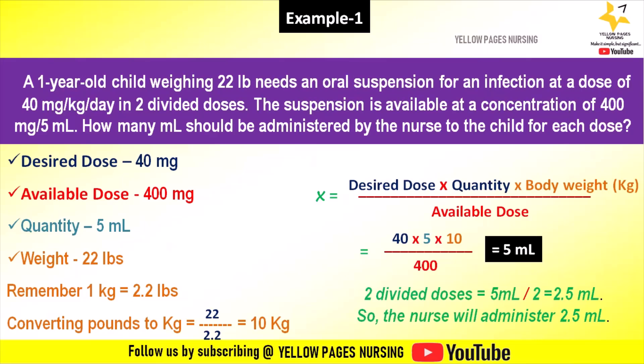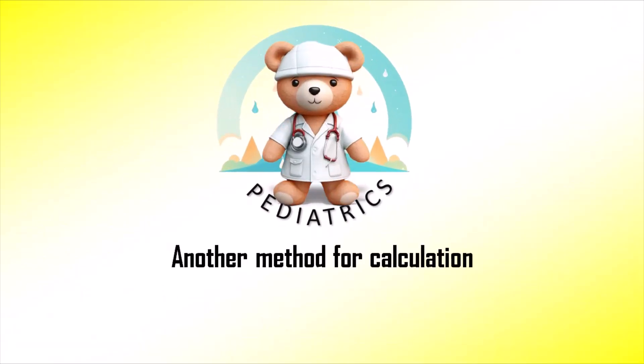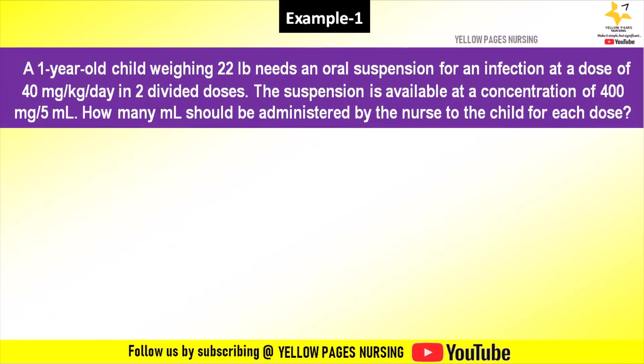Now we will work with the same example using another method for calculation. A one-year-old child weighing 22 lb needs an oral suspension for an infection at a dose of 40 mg per kg per day in two divided doses. The suspension is available at a concentration of 400 mg per 5 ml. How many ml should be administered by the nurse to the child for each dose?